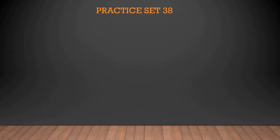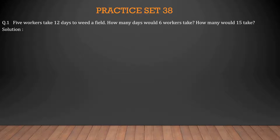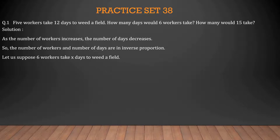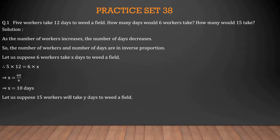Practice set 38, first question: 5 workers take 12 days to weed a field. How many days would 6 workers take? How many days would 15 workers take? As the number of workers increases, the number of days decreases, so the number of workers and number of days are in inverse proportion. Let 6 workers take X days. So 5 × 12 = 6 × X, giving X = 60/6 = 10. Hence, 6 workers take 10 days to build a field.